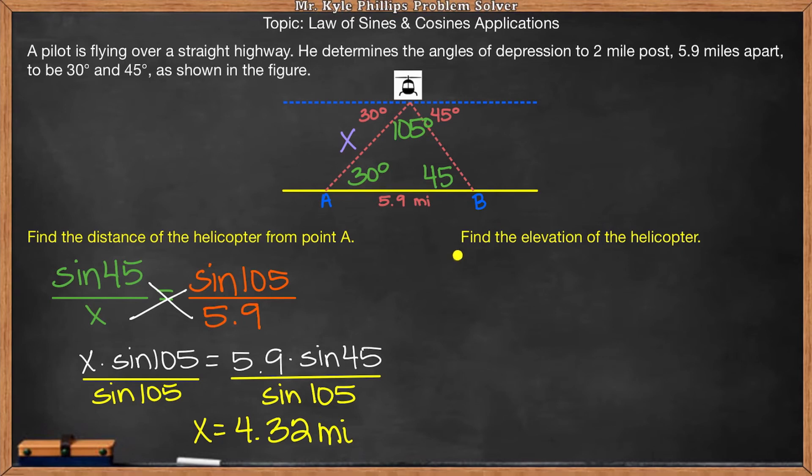Then it says find the elevation of the helicopter. Okay, so elevation is height. So here if I took the helicopter and drew a straight line down, this is my height. So height always makes a right angle with the ground. So now we kind of have a new problem. So we have this right triangle which represents our height.